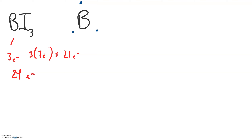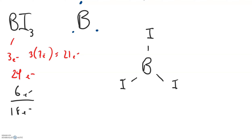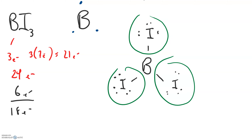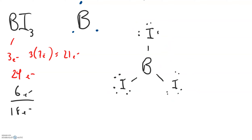Let's do our skeleton. We're going to put boron in the middle since it's the one we have the fewest of, and we'll draw our skeleton by bonding an iodine to each side of the boron. That means we've used up six electrons in the bonding, and we have eighteen left. We'll take those eighteen electrons and put the valences around every atom involved in this molecule — and that uses up all eighteen. Our iodines all have access to eight, but the boron only has access to six.